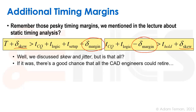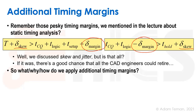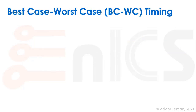But is that all there is? Well, if it was, there's a good chance that all the CAD engineers could retire. There's a lot more. So what, why, and how do we apply these additional timing margins that I lumped into this delta margin parameter?